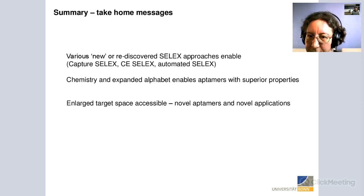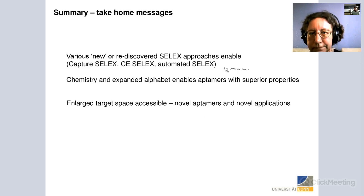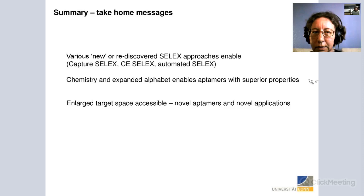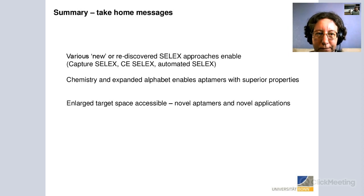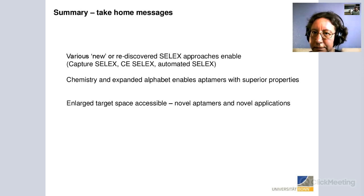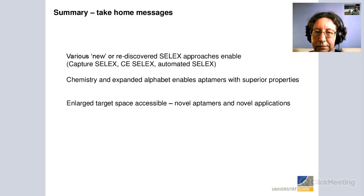Dario asks: would it be possible to get rid of PCR bias by next-generation sequencing analysis? No — NGS is done after the selection, so you can't eliminate PCR bias that way. PCR bias is an inherent property of the library, not of the downstream analysis method. You can avoid it by careful primer design, emulsion PCR, or droplet PCR, but NGS alone wouldn't be helpful for this.